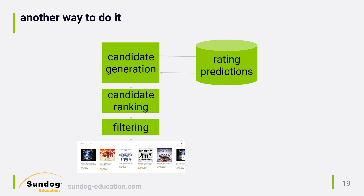Another architecture popular with researchers is to build up a database ahead of time of predicted ratings of every item by every user. The candidate generation phase is then just retrieving all rating predictions for a given user, and ranking is just sorting them. However, this requires looking at every single item in your catalog for every single user, which isn't very efficient at runtime. The previous approach only started with items the user actually liked and worked from there. The reason we see this architecture is because people like to measure how accurately they can predict ratings, good or bad — but as we'll see, that's not really the right thing to focus on in the real world. If you have a small catalog of items to recommend, however, this approach isn't entirely unreasonable.